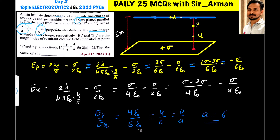The ratio EP by EQ is given as 4 by A. Given that 2 sigma equals lambda, that is lambda equals 2 sigma, we need to find the value of A.